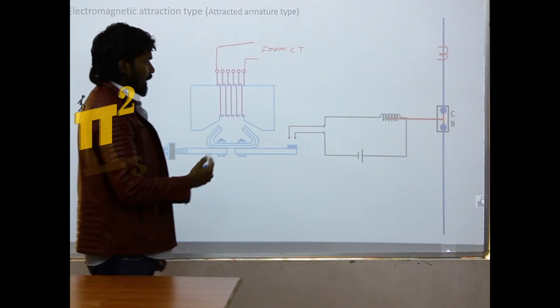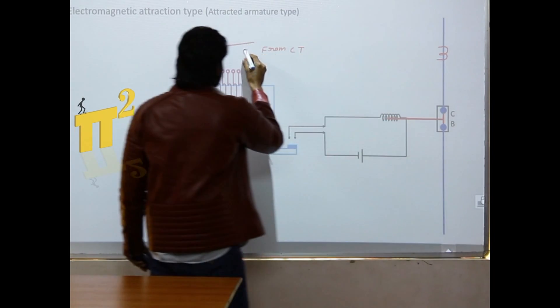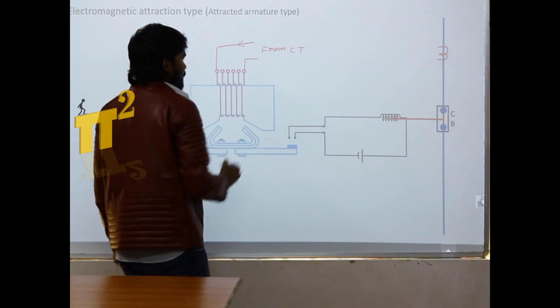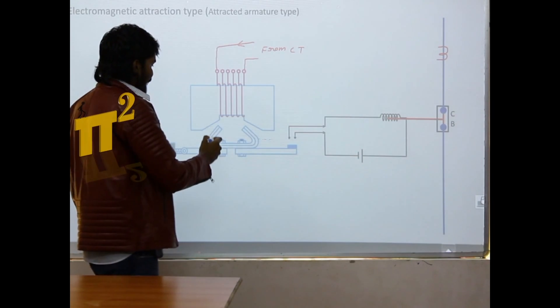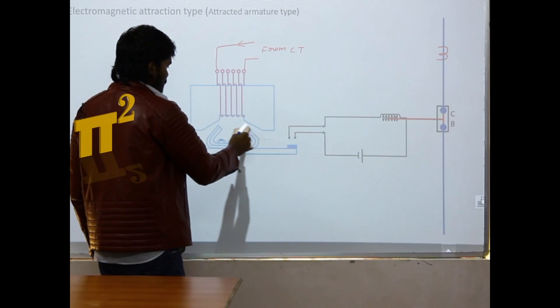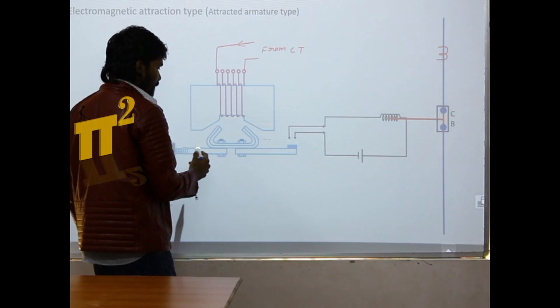Now when there is a high current through the line, when there is an overcurrent, the current flowing through this will be more. The output will be more.